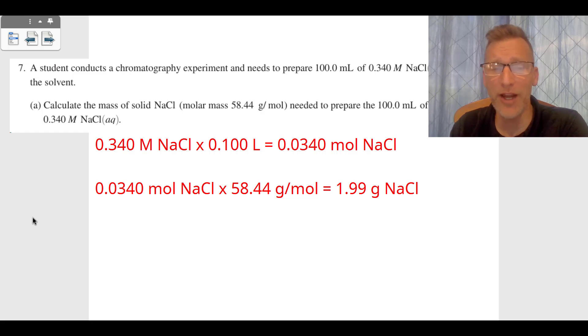So what are we going to do with molarity? We're going to multiply by liters. 0.340 molar times 0.100 liters, and that gives us 0.0340 moles of NaCl.